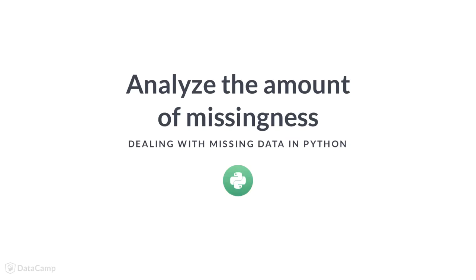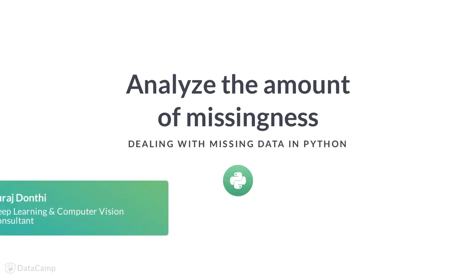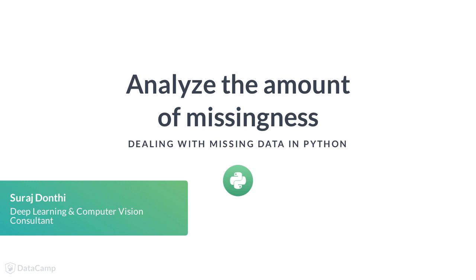You have done a great job at detecting missing values in the previous exercise. The next major step is to analyze the missing data. A basic analysis that can be performed for analyzing missingness is to find the total number and percentage of missing values for the columns in the dataset.